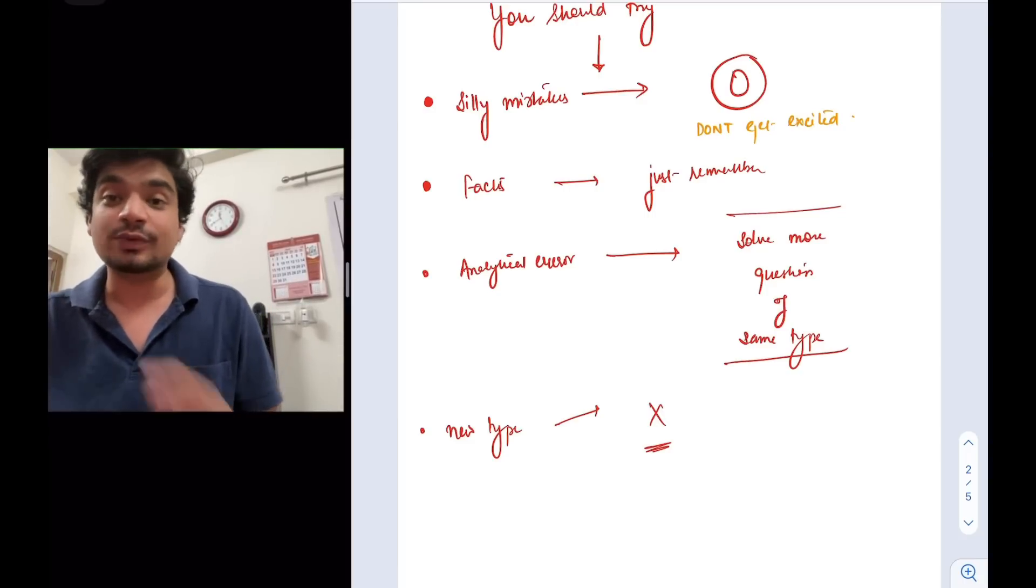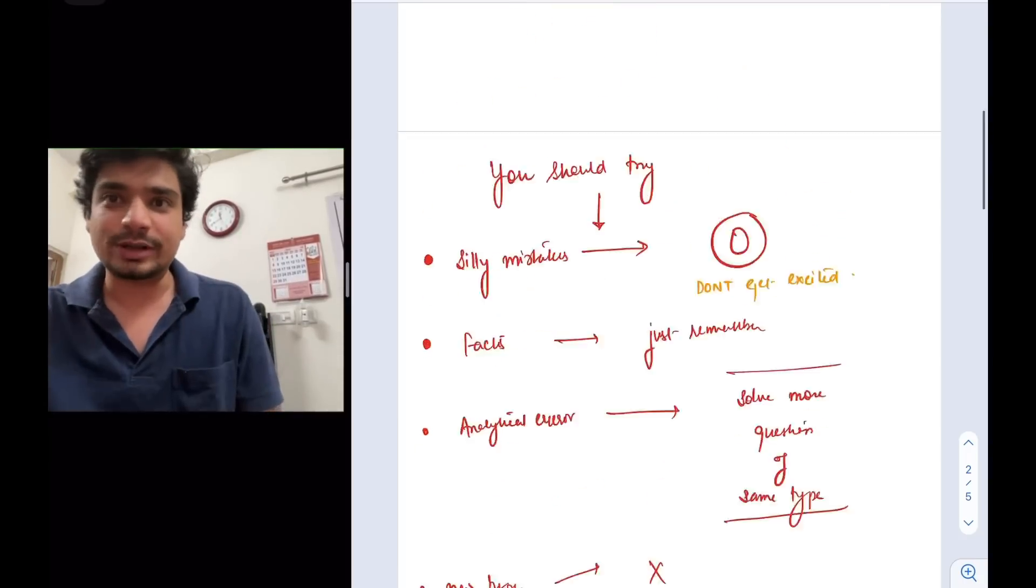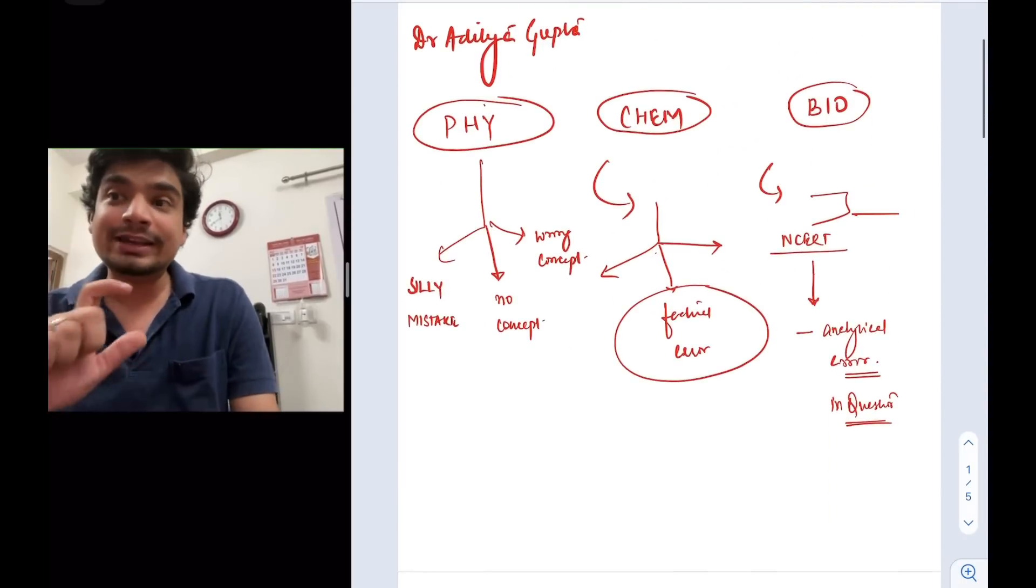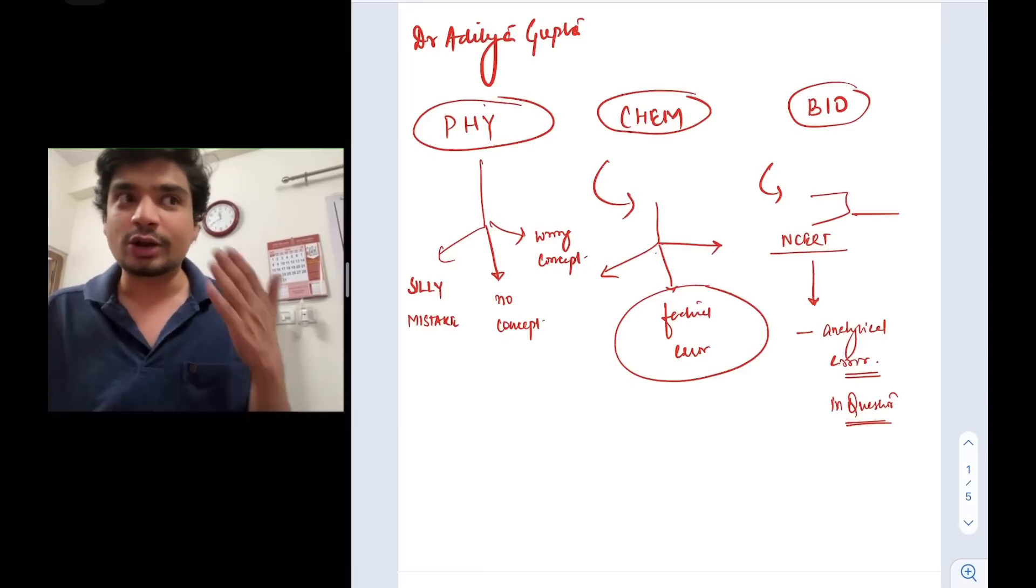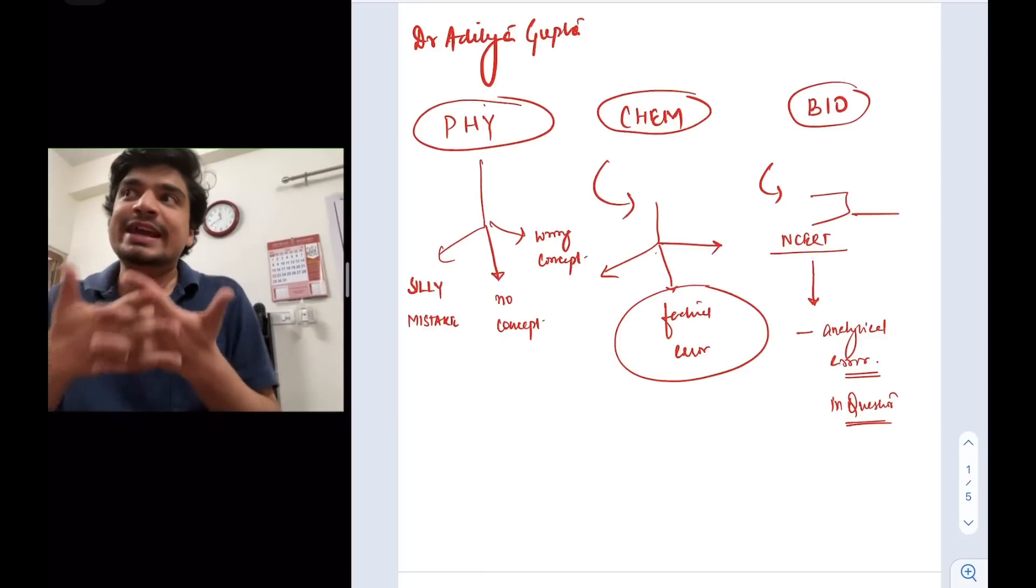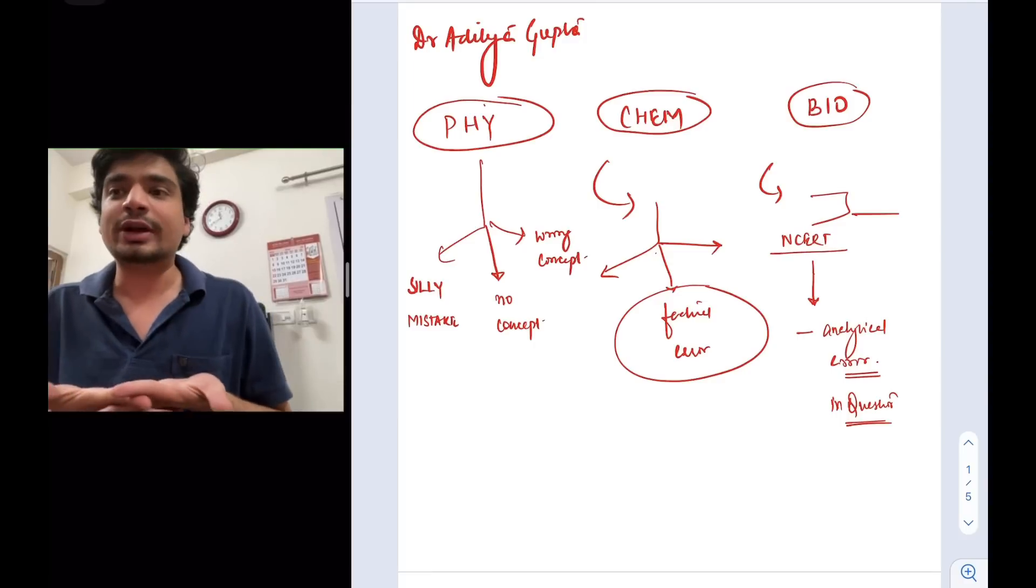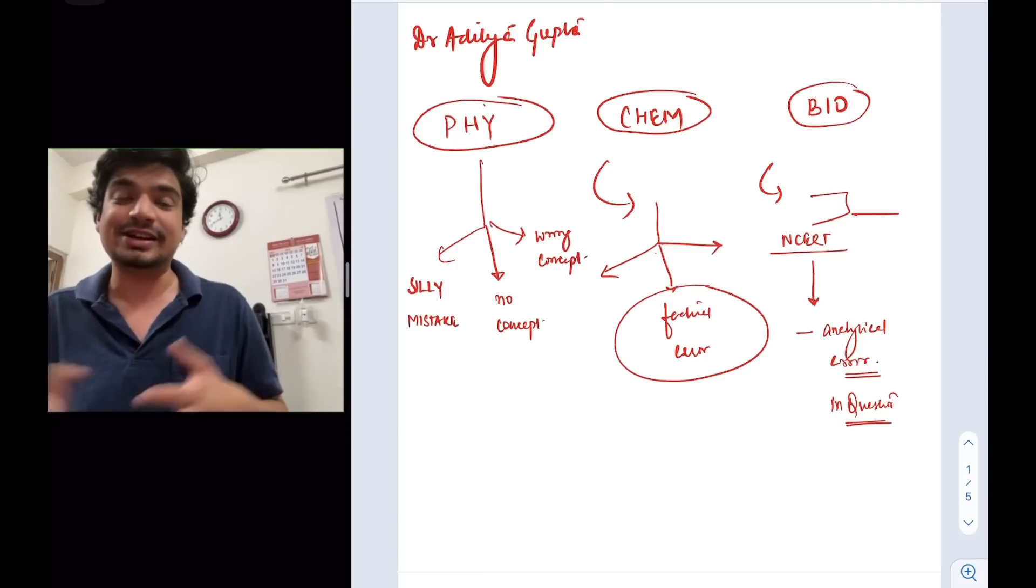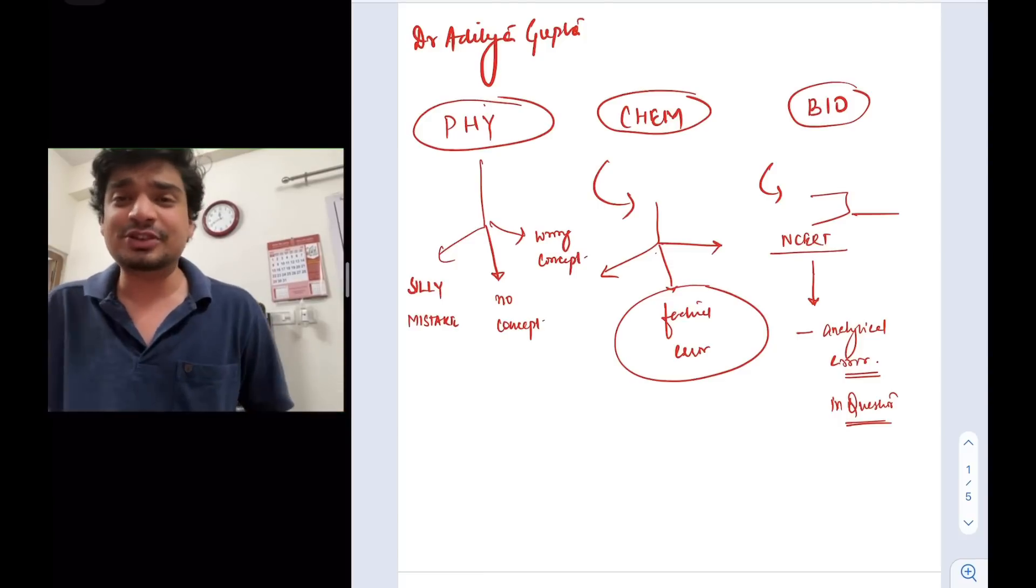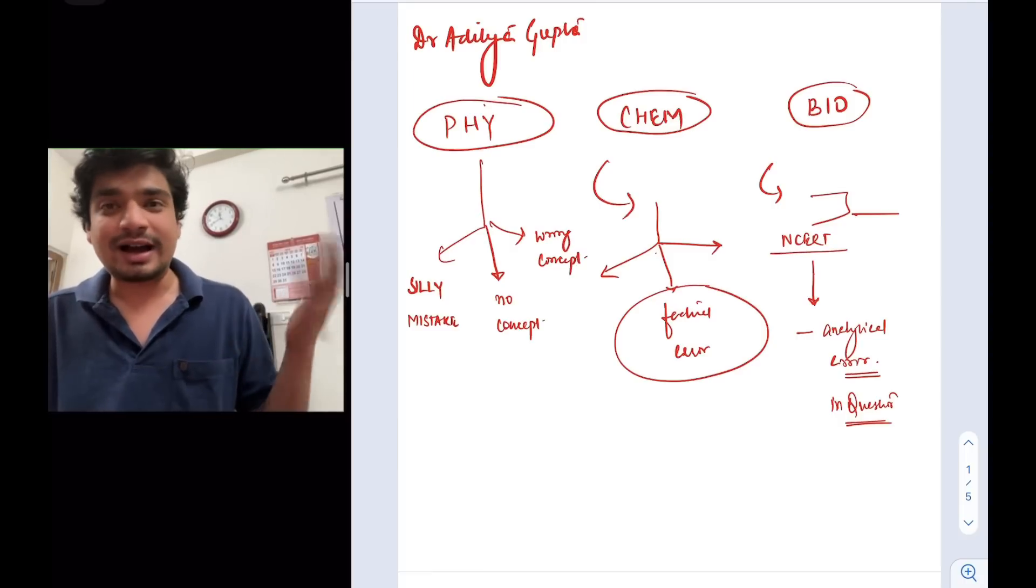Now as far as chemistry, inorganic chemistry and biology is concerned, they are mostly factual errors. You are not able to remember the facts. The factual errors also I think can be of two types. Things which you are not remembering from NCERT and things which you are remembering from NCERT. If you are not able to remember something which is outside of NCERT in that particular mock, I'll say doesn't really matter. Just remember that small fact and move on.